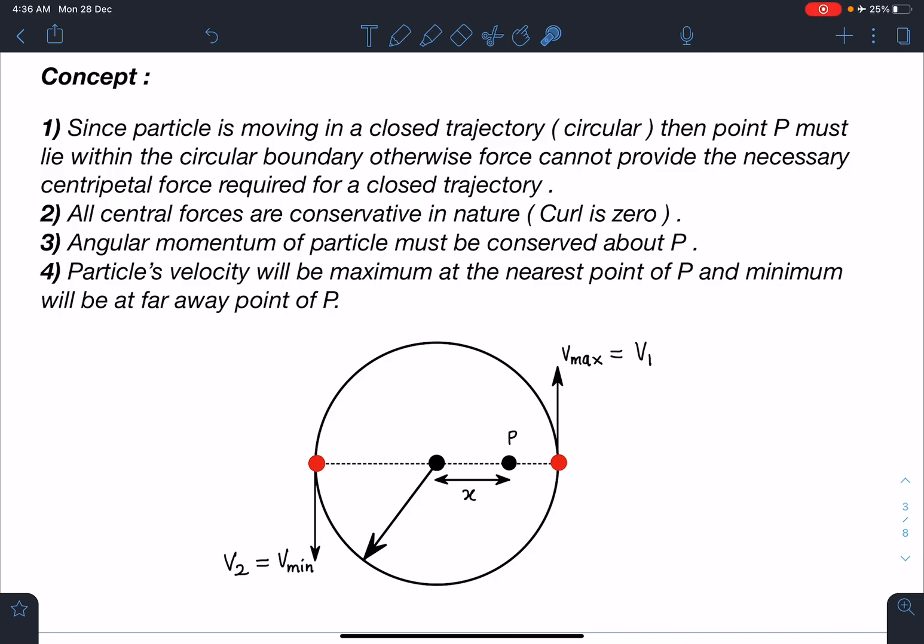Number two: All central forces are conservative in nature, meaning curl of any central force is going to be zero. Number three: Angular momentum of particle must be conserved about point P. So wherever this force will be pointing, about that point its angular momentum must be conserved. Everywhere it is pointing towards P and particle is moving in the circle, so the nature of this force is little different but these situations are somewhat similar to your gravitation elliptical orbits.